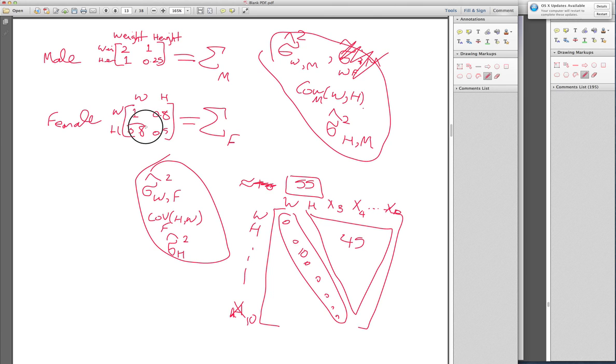Why 55? Because covariances are the same. Covariances of weight and height is the same as height and weight. So if you just estimate top part of diagonal, you're fine. So basically, we need to estimate 55 parameters just for females, 55 for males.